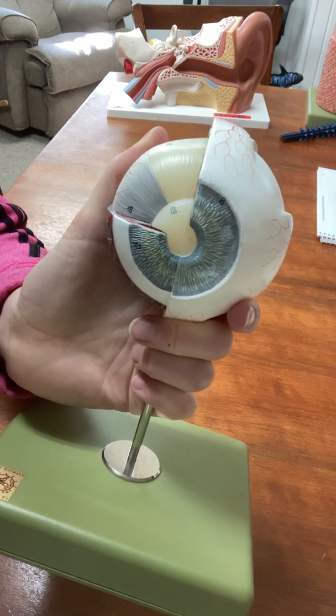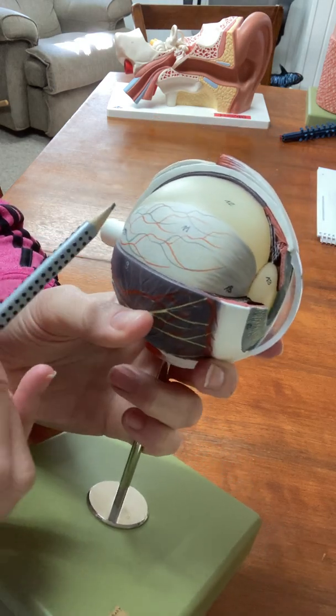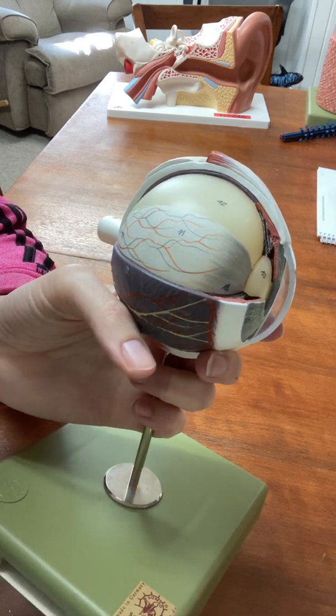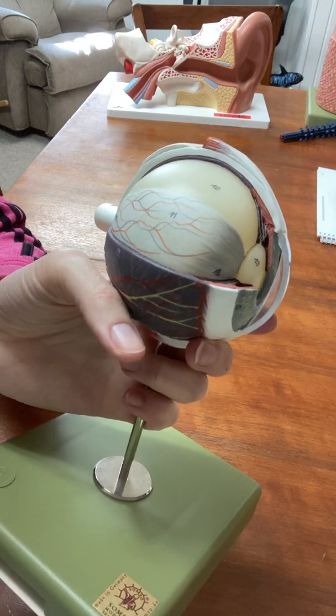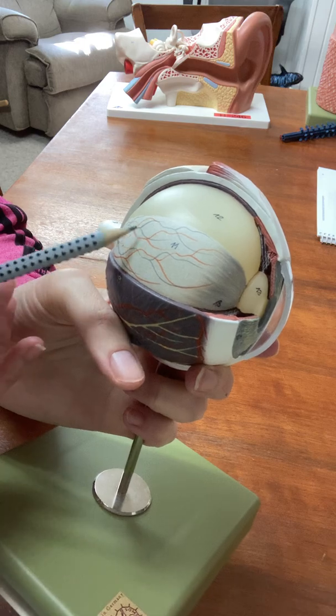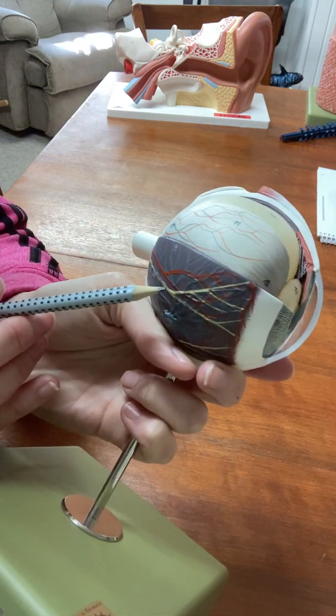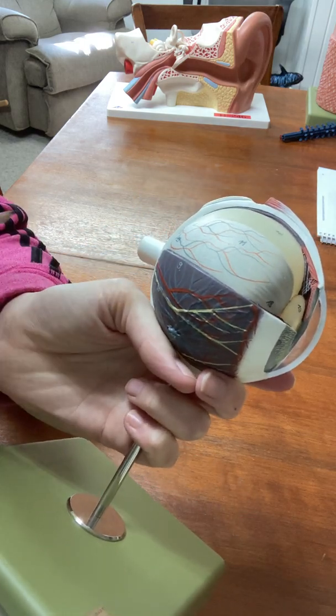That's it for the middle layer of the eye. The innermost layer of the eye is this white layer right here. It's very thin and it is called the retina. The retina has lots of blood vessels in it, so does the choroid, so you see those here.